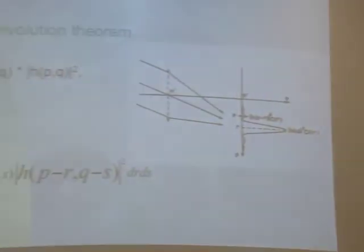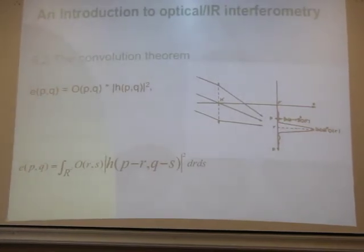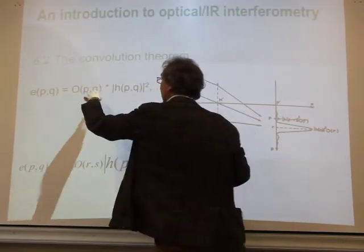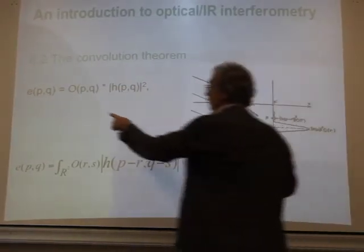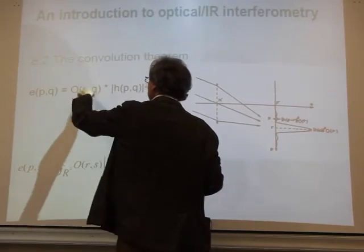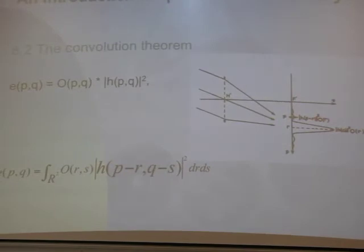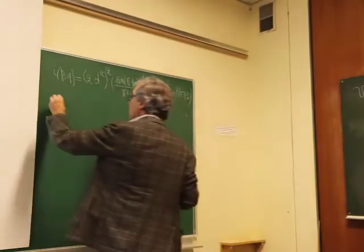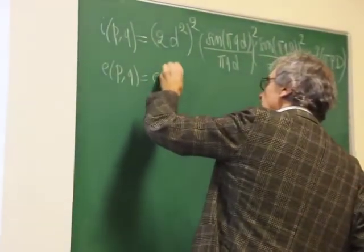After the convolution theorem: for an extended source whose surface brightness is represented by O(p,q), the distribution of brightness in the focal plane is given by the convolution of O(p,q) with the response function of the interferometer. For two square apertures, E(p,q) can be represented as the product E(p) × E(q).